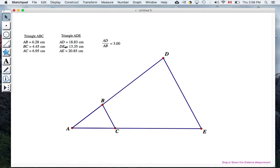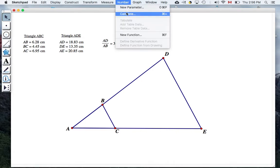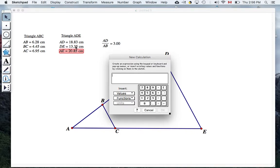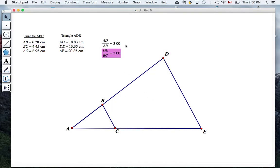Okay. So I'm also going to compare DE and BC. So I'll go to Number, Calculate, DE, divided by BC. And I'm going to compare AE and AC here.